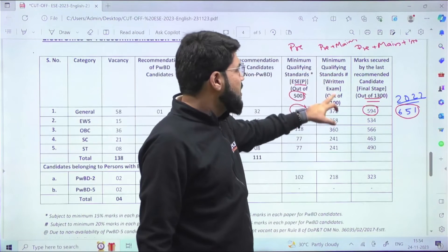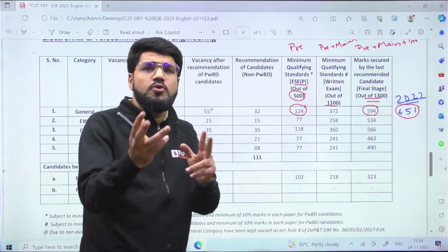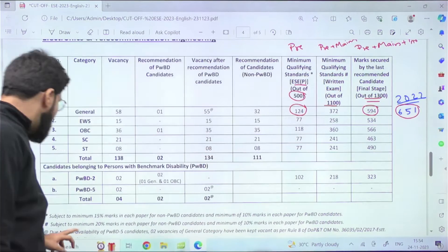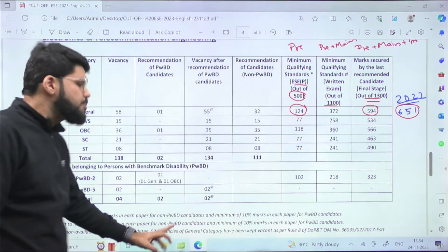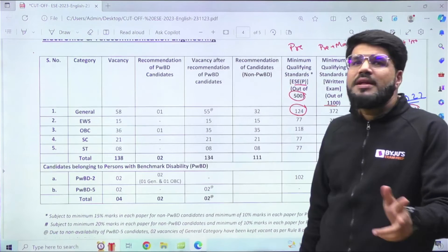Similarly, minimum qualifying standards for written exam - when you come to the mains, there are two technical written papers, paper one and paper two, and you should have minimum 20 percent in each paper. That means minimum 20 percent is 60 marks each.